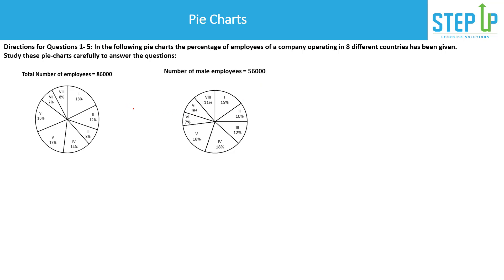Before jumping to the questions, what can we derive from this data? We can calculate the number of employees in each country. If someone asks for male employees in a specific country, we can calculate that too. We can also calculate female employees — total female employees is simply 86,000 minus 56,000, which is 30,000.